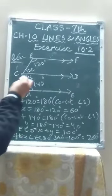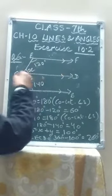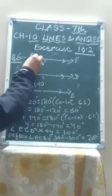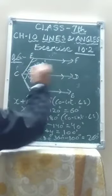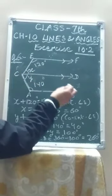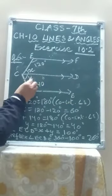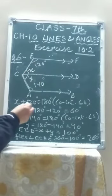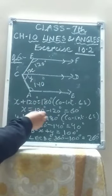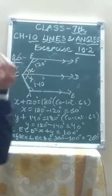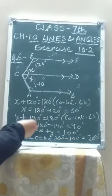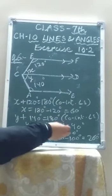Question number 6. Here three lines A-B, C-D, and E-F are given which are parallel to each other. The transversals are E-C cutting lines E-F and C-D, and C cutting lines C-D and A-B. You have to find the values of X and Y. Considering the two parallel lines, 120 and X are co-interior angles, so X plus 120 equals 180 degrees — X equals 60 degrees. And Y and 140 are also co-interior angles, so Y plus 140 equals 180 degrees — Y equals 40 degrees.